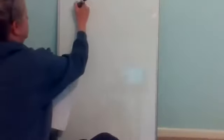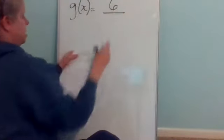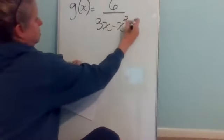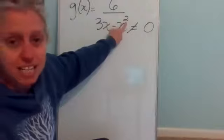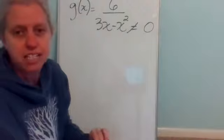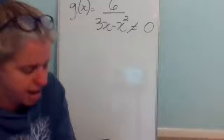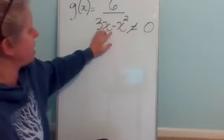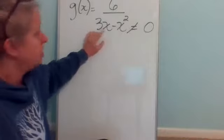Number four: G of X equals six over three X minus X squared. Again, the denominator can't equal zero. Since it is a squared term, I'm going to use quad to find the two numbers that X cannot equal. Before I use quad, I'm going to rearrange the terms — I want my squared term to be first. So I'll flip-flop these and move the X squared up front, then the plus three X behind it.